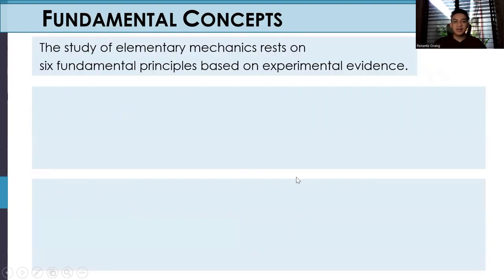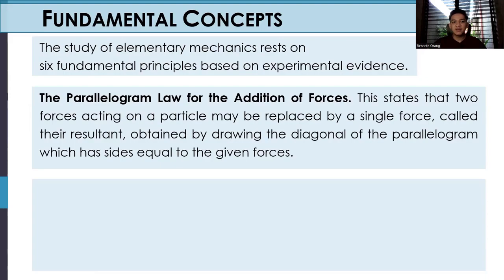The study of elemental mechanics rests on six fundamental principles based on experimental evidence. First, we have the parallelogram law for the addition of forces. This states that two forces acting on a particle may be replaced by a single force called their resultant, obtained by drawing the diagonal of the parallelogram which has sides equal to the given forces.